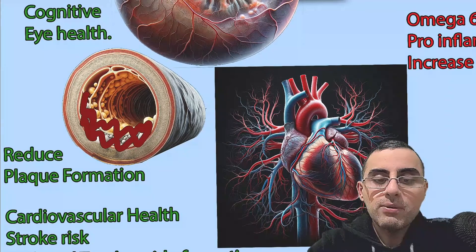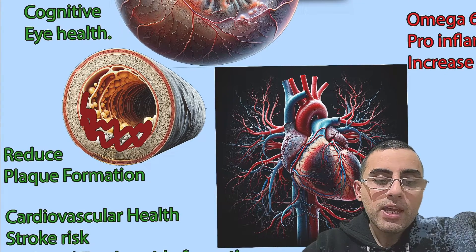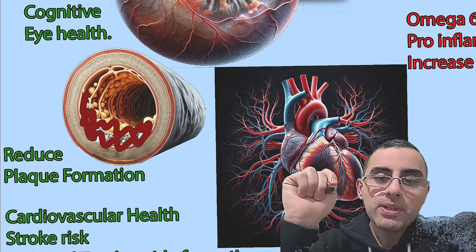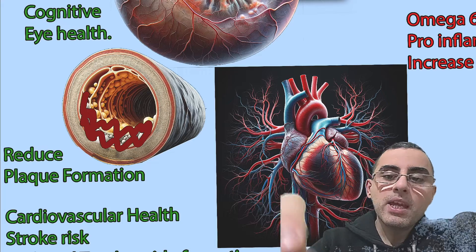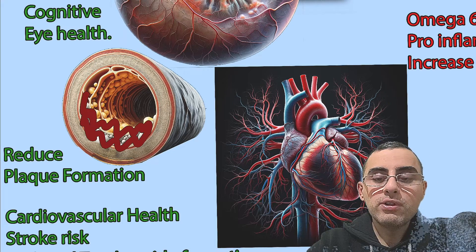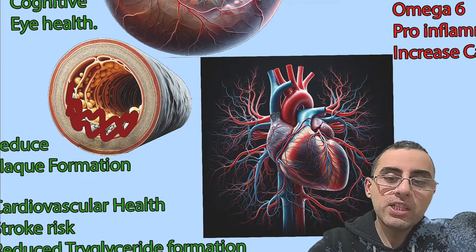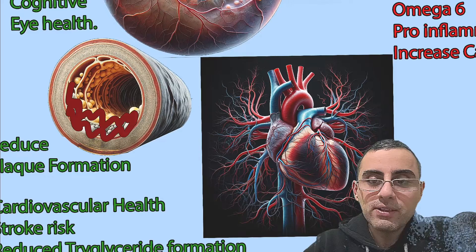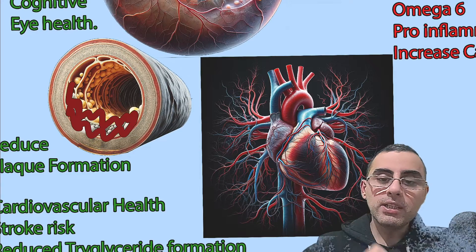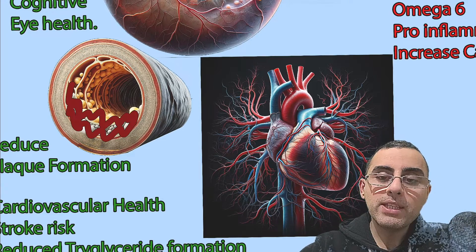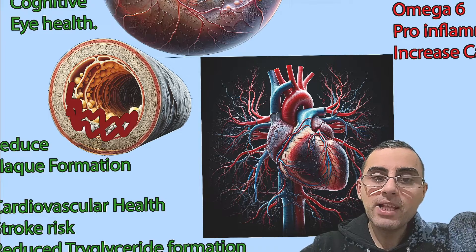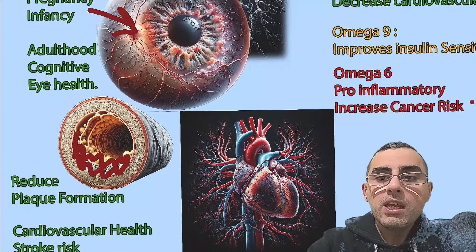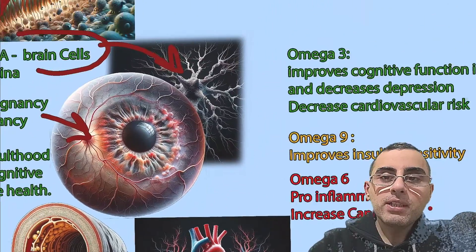Omega-3 decreases plaque formation in arteries — that's a very important protective function. It improves cardiovascular health and decreases risk of stroke. In the liver, it decreases formation of triglycerides and improves fatty acid oxidation, meaning it promotes burning of fatty acids instead of storing them as fat cells, giving it an anti-obesity action.